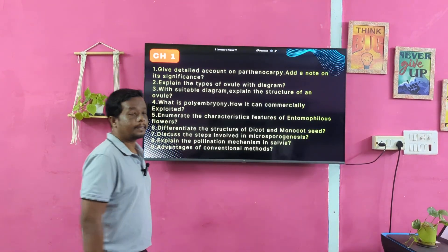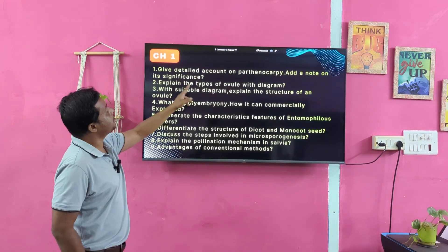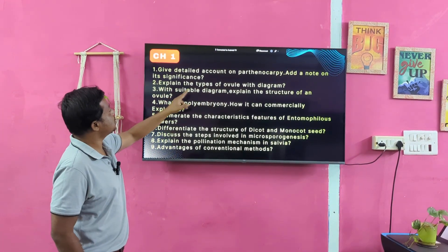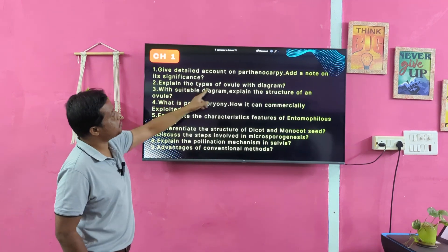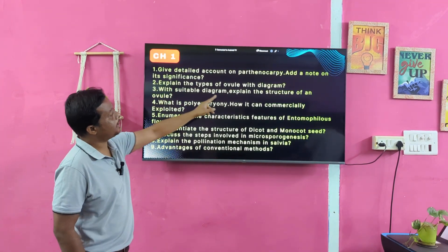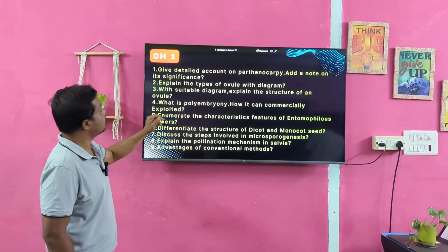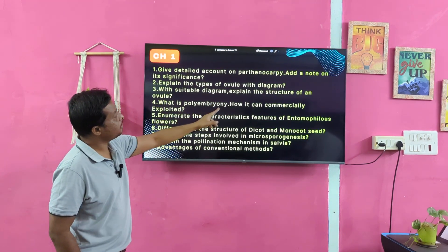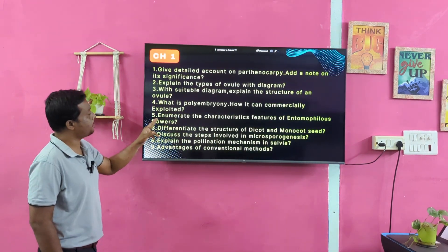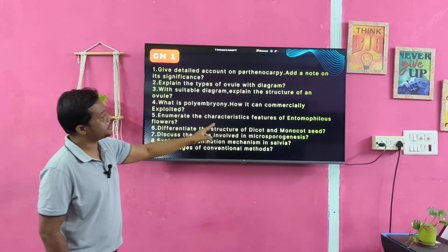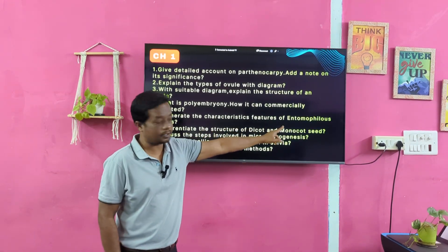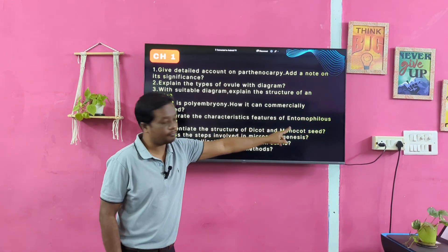Chapter 1. First question: give a detailed account on parking out and add a note on its significance. Second question: explain the types of ovum with diagram. With a suitable diagram, explain the structure of an ovum. What is polyembryony? How can it be commercially exploited? Enumerate the characteristics and features of entomophilous flowers — this is a very important question.